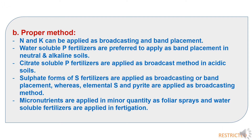Regarding proper method of application: nitrogen and potassium can be applied by broadcasting and band placement. Water-soluble phosphorus fertilizers are preferred for band placement in neutral and alkaline soils. Citrate-soluble phosphorus fertilizers are applied by broadcast method in acidic soils. Sulfate forms of sulfur fertilizers are applied by broadcasting or band placement, while elemental sulfur and pyrite are applied by broadcasting. Micronutrients are applied in minor quantities as foliar spray, and water-soluble fertilizers are applied through fertigation.